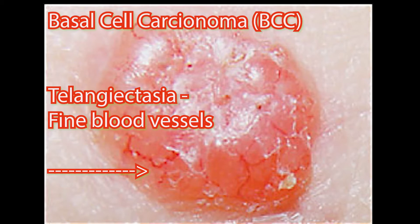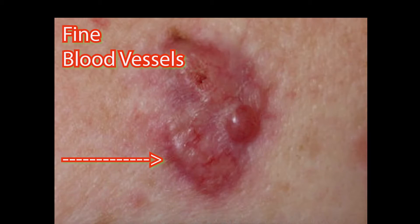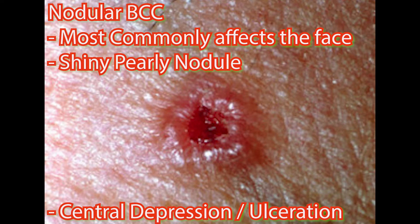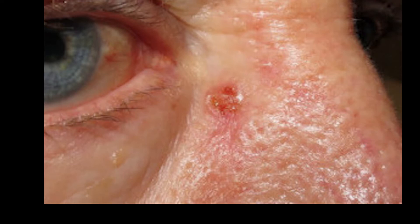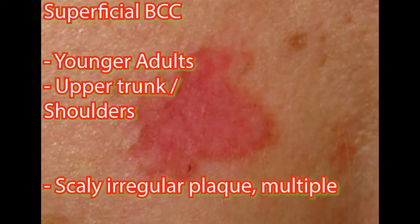Some of these lesions may have tiny blood vessels across the surface called telangiectasia, as you may be able to see from these pictures, especially if you look up closely. There's also another form of basal cell carcinoma called the nodular type, which is the most common type affecting the face. It has a shiny or pale nodule with a smooth surface, as you can see here. It may also have a central depression or ulceration, so its edges appear rolled up, and the blood vessels cross its surface.